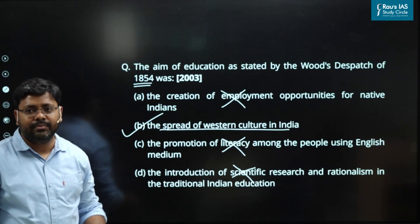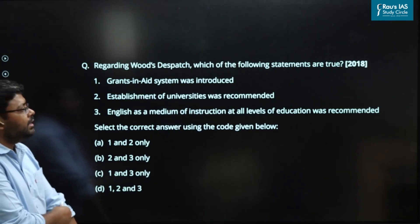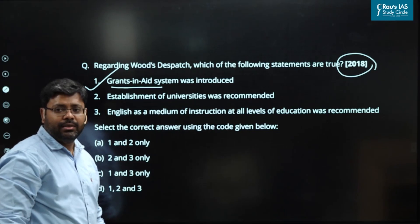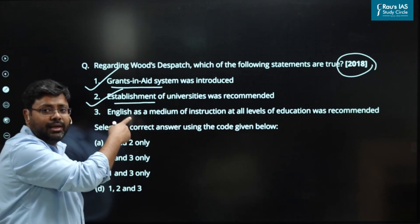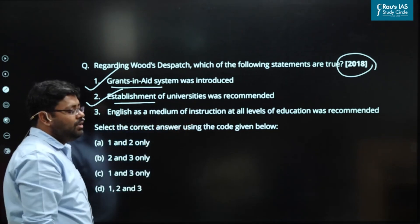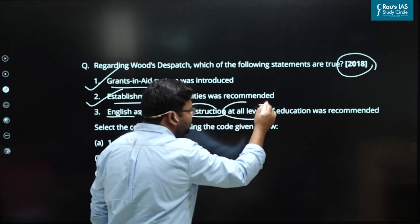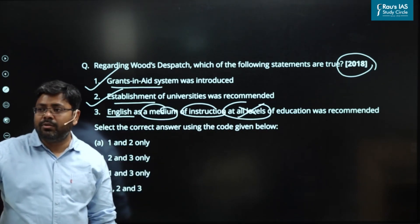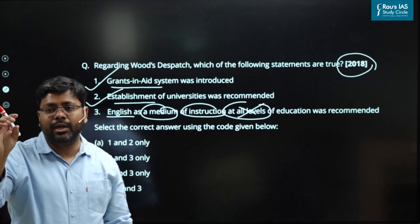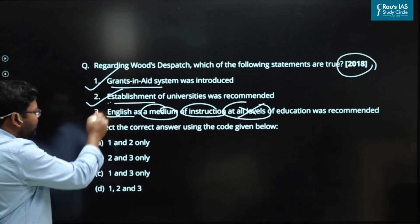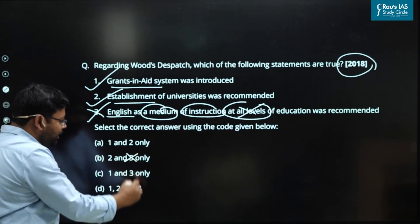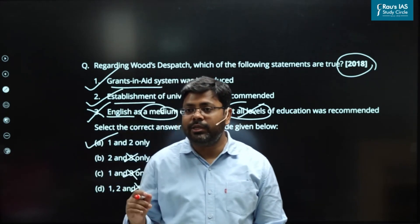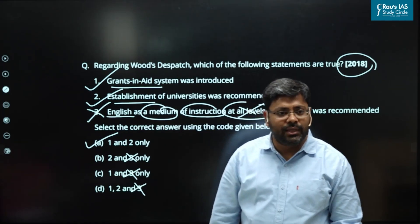Another UPSC 2018 question on Wood Dispatch: which of the following statements are true? Grant-in-aid system — yes, it was given by the Wood Dispatch. Establishment of universities — yes, it was recommended, and universities were later established at Calcutta, Bombay and Madras. English as medium of instruction at all levels — this is incorrect. Wood deviated away from Macaulay's Minute and said not only English; rather, vernacular should be used at the primary level, vernacular and English at the middle layer, and English at the university level. So the third statement is absolutely wrong. Eliminating the third option from B, C, and D gives you the answer A.